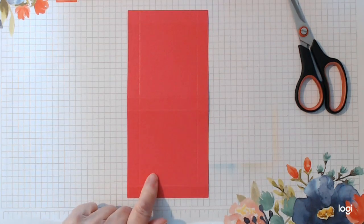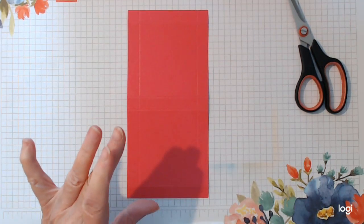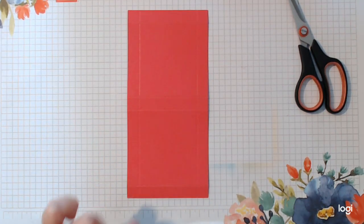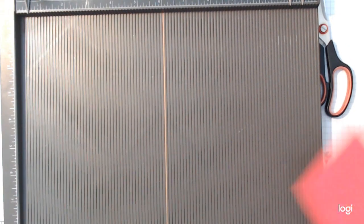The card I'm using is Magenta Madness, I think you call it, from Stampin' Up. It is 3 1/2 inches wide by 7 1/2 inches long, sorry, I'll get this right yet. 3 1/2 by 7 1/2 and we're going to score it.